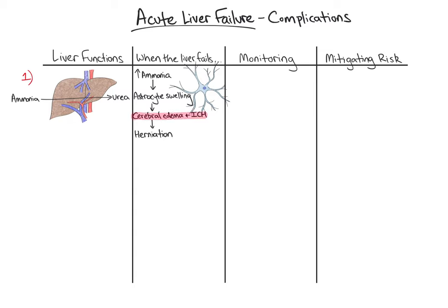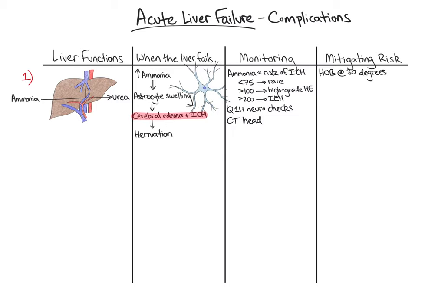Cerebral edema and its complications are a common cause of death in acute liver failure. The serum ammonia concentration correlates with the risk of intracranial hypertension. Patients with ammonia levels less than 75 rarely develop ICH. Greater than 100 is a risk factor for high-grade hepatic encephalopathy, and greater than 200 predicts the development of ICH. We can monitor for cerebral edema with Q1-hour neurochecks and CT of the head for any acute changes in mental status. We mitigate the risk of cerebral edema by elevating the head of the bed to 30 degrees, keeping a net even fluid balance via CRRT if necessary, and allowing for hyperventilation. In addition, we can induce hypernatremia to 145-155 with hypertonic saline to decrease water entry into astrocytes and brain cells. Finally, mannitol can be administered if there is concern for herniation.